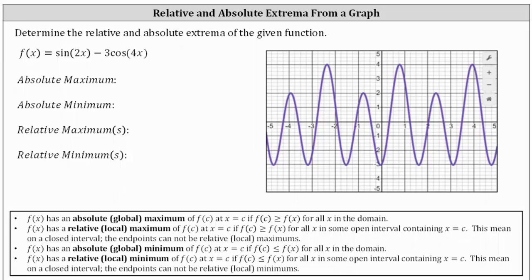Determine the relative and absolute extrema of the given function. We have f of x equals the sine of 2x minus three times the cosine of 4x, and the graph is provided here on the right. Notice how the function is continuous over its entire domain.